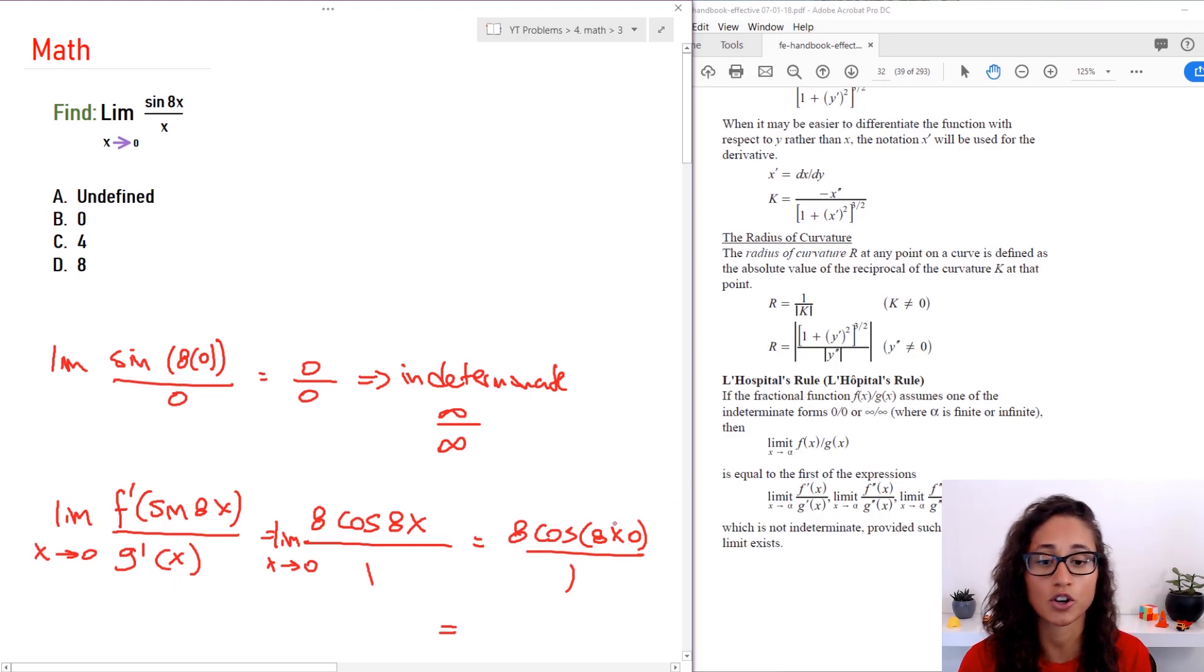You guys know cosine of 0 is just 1. So I'm going to have the answer as 8. So that's going to be your answer, which is D.